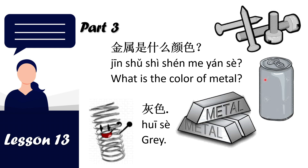金属是什么颜色 means 'What is the color of metal?' The answer is 灰色, which means gray. So 金属是什么颜色 means 'What is the color of metal?' and 灰色 is gray.